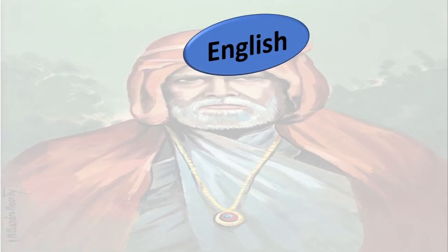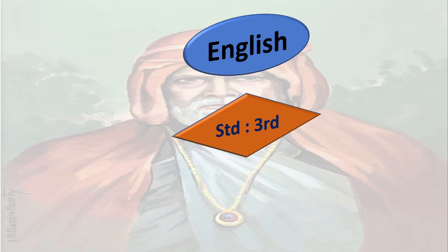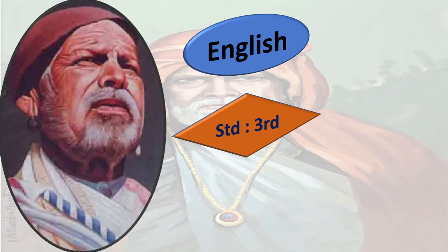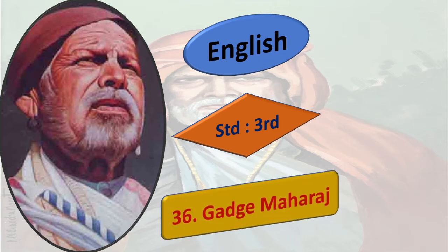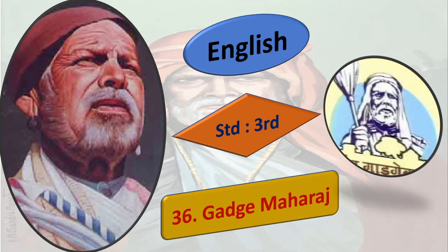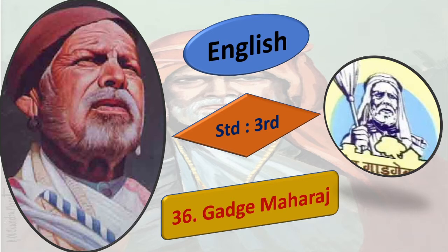The subject is English of Standard 3rd and the name of the lesson is No. 36, Gadge Maharaj. This lesson tells us about the life history of Gadge Maharaj. This is called a biography — a person writes about the life history of another person. So this is the biography of Gadge Maharaj.